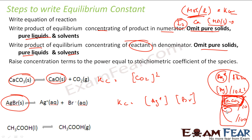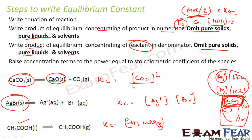For the reaction of a pure liquid converting to gas, we ignore the pure liquid. For example, for CS₂ + heat → CS₂(g), the pure liquid is ignored and Kc equals the concentration of the gaseous product. To summarize: write the concentration of the products in the numerator, divide by the concentration of the reactants, and raise each to the stoichiometric coefficient. We will take more examples to understand how to write Kc.